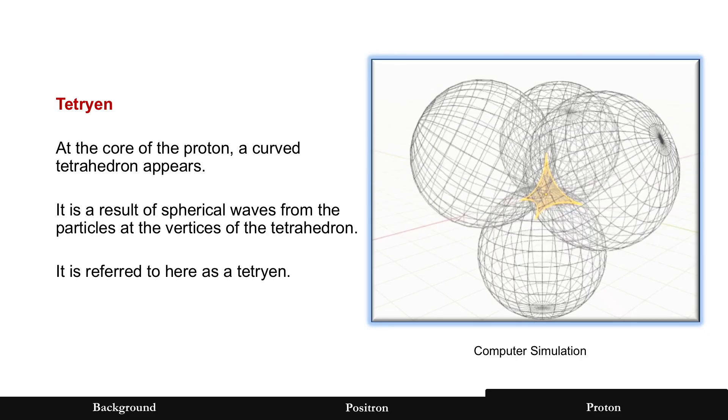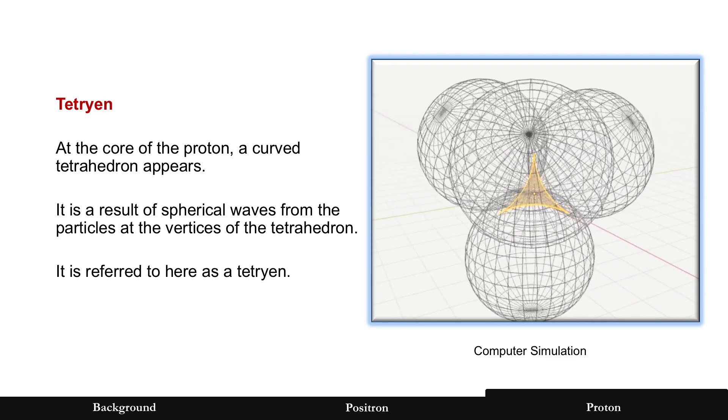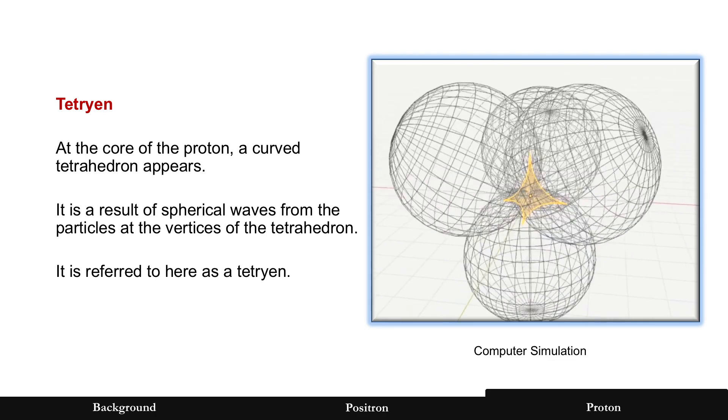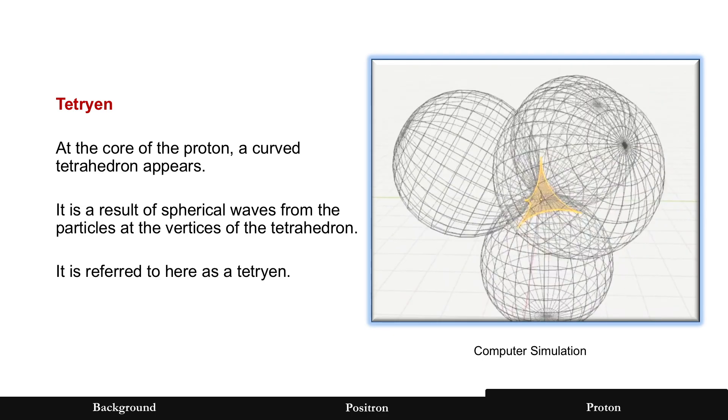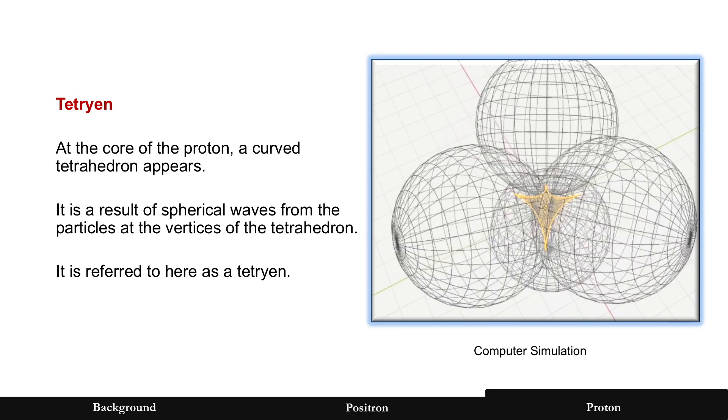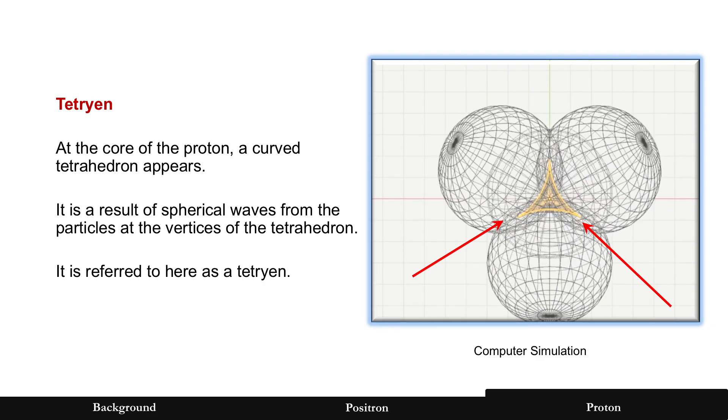But there's more about the geometry. Let's visit this now. At the core of the proton, four particles at the vertices of tetrahedron, you'll notice that there's a smaller tetrahedron that forms. But because of the spherical nature of it, see there in yellow, is a curved tetrahedron. And we're going to refer to that as a tetrion. There it is right there in yellow.